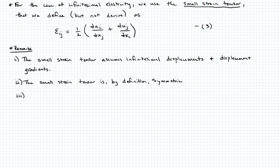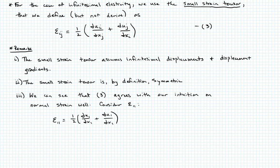And so the way we can see that is, let's go ahead and just consider epsilon one, one. So we can write from equation three, we can write that epsilon one, one is equal to one half times the partial of U one with respect to X one, plus the partial of U one with respect to X one. And that, of course, just looks like the partial total of U one with respect to X one. We can call that equation four.